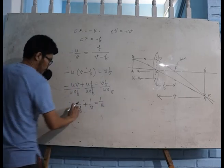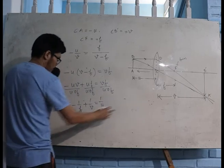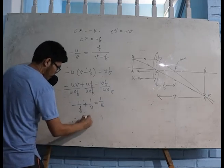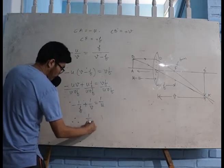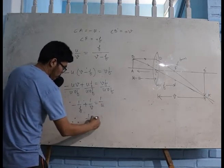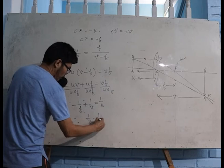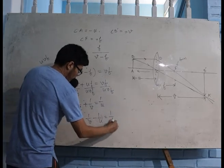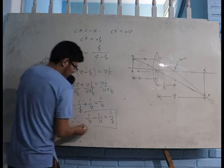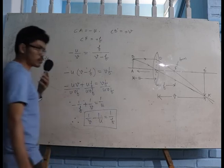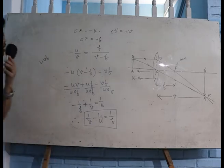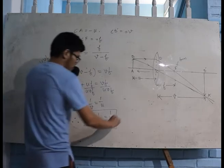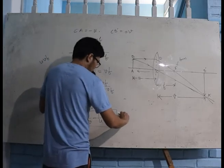Therefore, transferring the term to the other side and keeping this one as before: one by v minus one by u equals one by f. This is your lens formula.